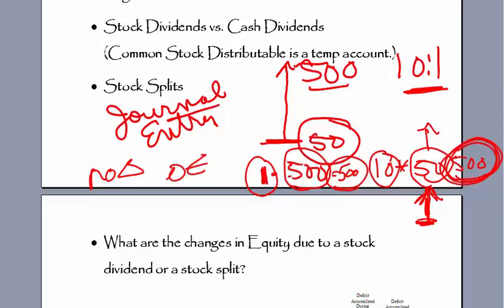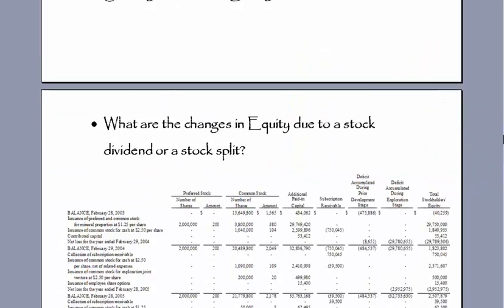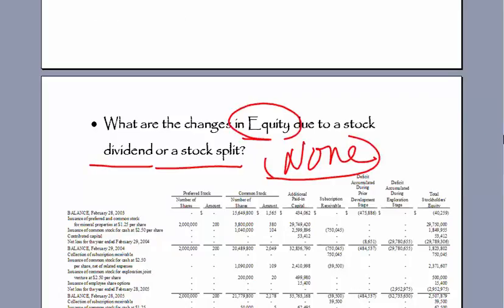The very last item: what are the changes in total equity due to a stock split or a stock dividend? The answer is none — there's no overall change. Internally there's a different makeup, but the total equity remains the same.